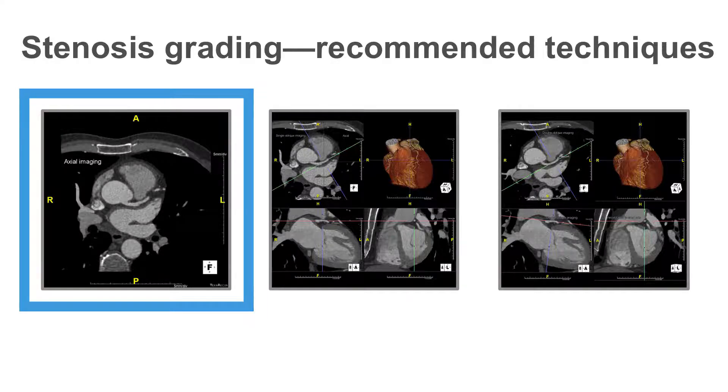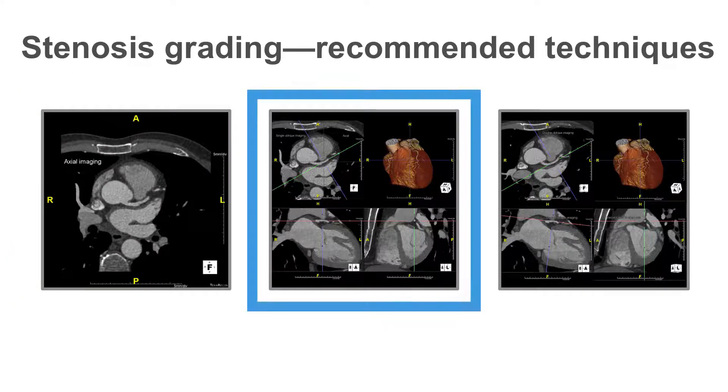This can be seen on the left hand imaging pane. Single oblique imaging is where the crosses are aligned with the plaque in one plane only, with the reader looking at all of the corresponding images thereafter. This is seen in the middle imaging pane.